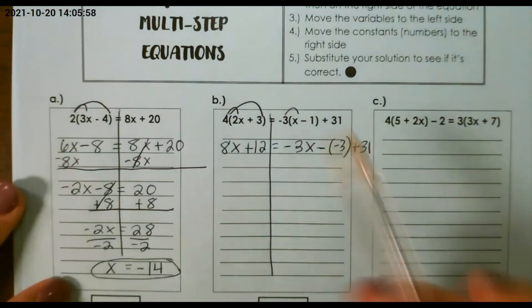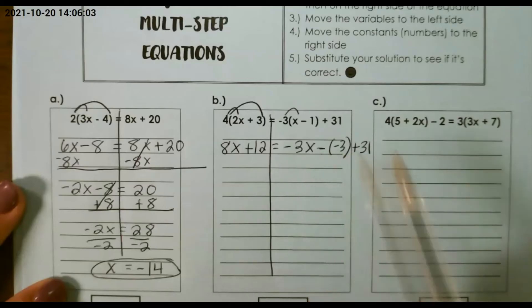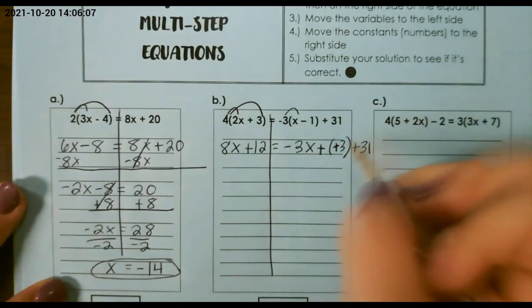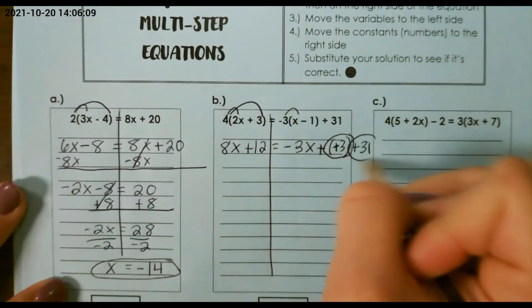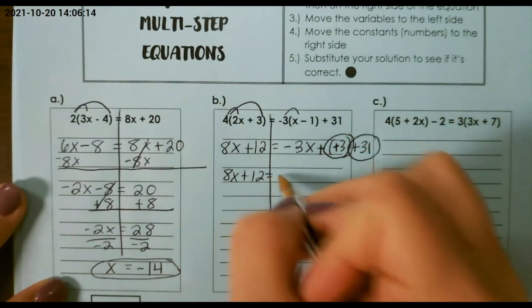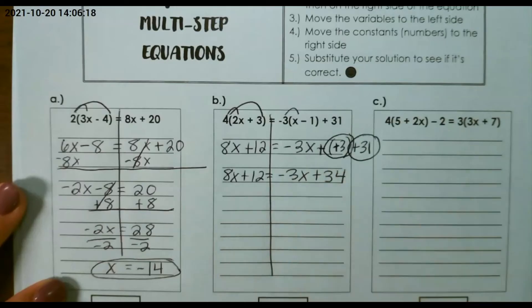The trick here is when we look over here, we have double signs. We know that if we subtract a negative, that really means adding a positive. So then, I can combine like terms. So 8x plus 12 doesn't change on the left, and I have negative 3x plus 34 on the right.